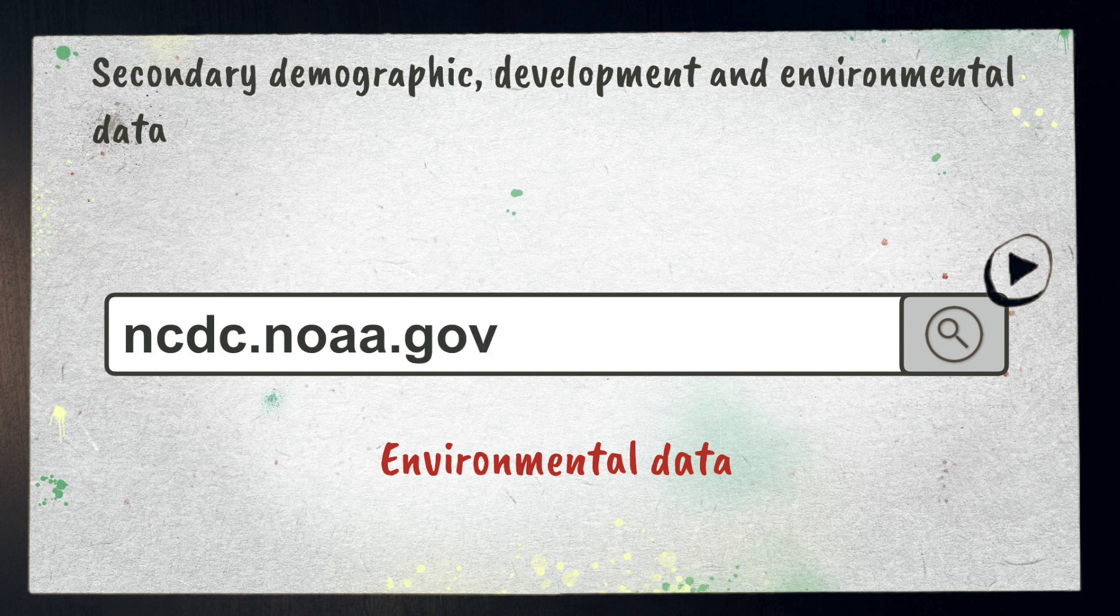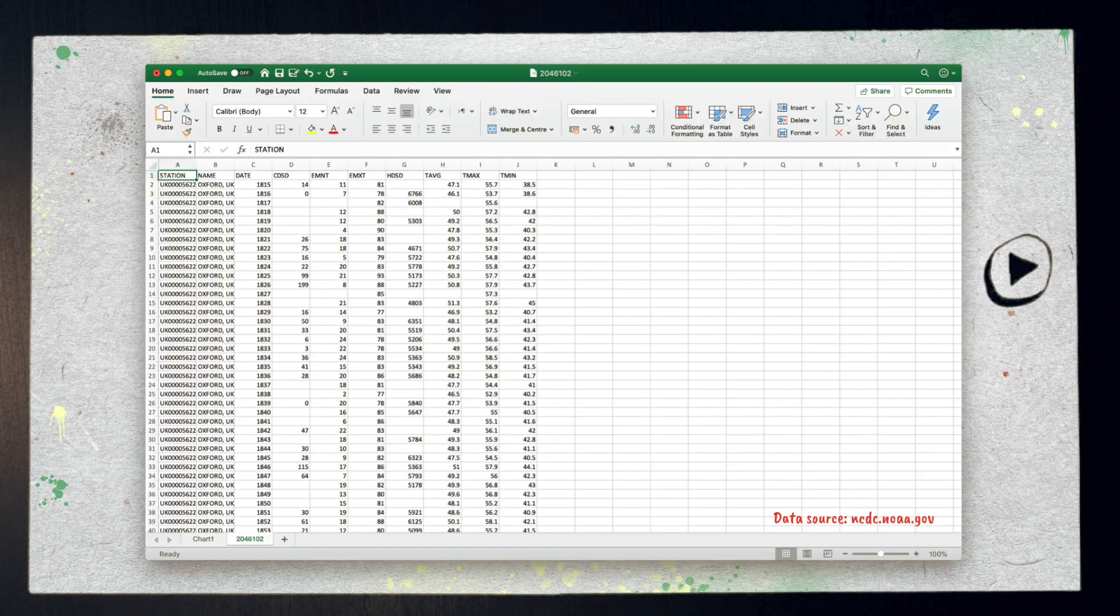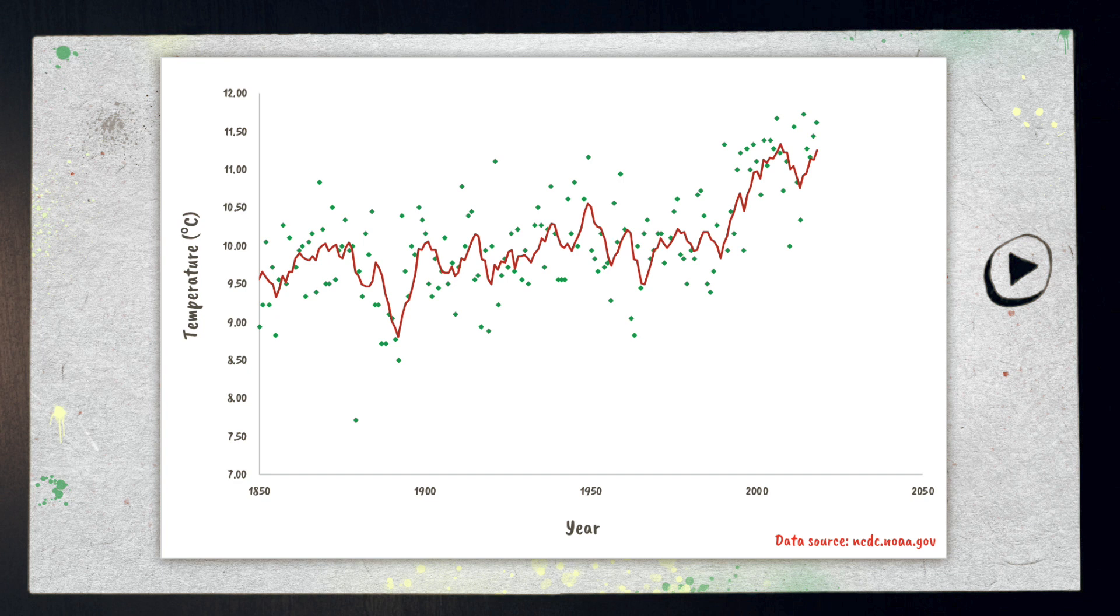Just to give you an idea of what's available I went on the NOAA website and downloaded some temperature data for a specific location in the UK from 1850 to 2018 and here it is presented on a graph. It took me about 10 minutes to find the data download it and make the graph. You can appreciate just how useful data banks like this can be for an assignment like the ESSIA.